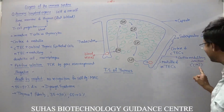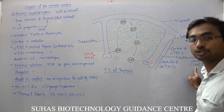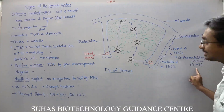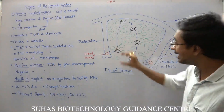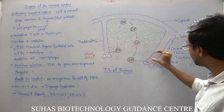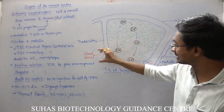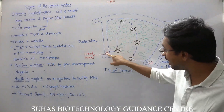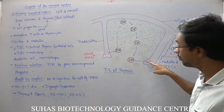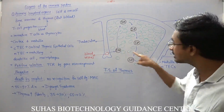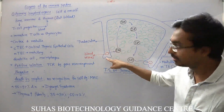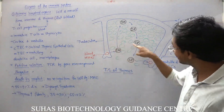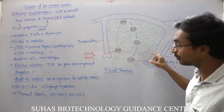The junction of cortex and medulla is called the corticomedullary junction — CMJ. In the corticomedullary junction you can see blood vessels are present, and blood vessels are not only present in the trabeculi but inside the thymus also.